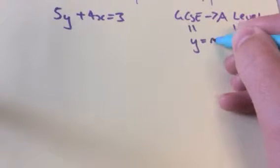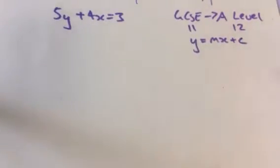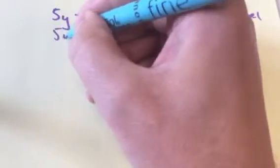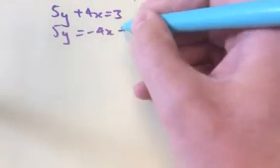And we know from GCSE that it's y equal to mx plus c. So we're going to rearrange this. 5y equal to minus 4x plus 3.